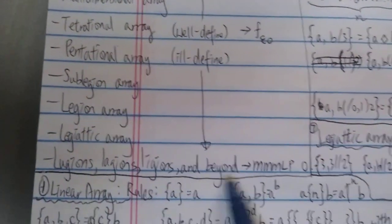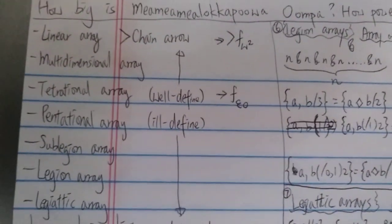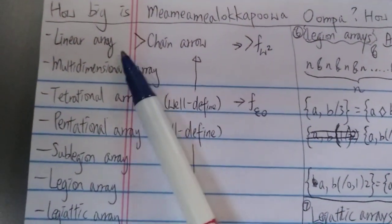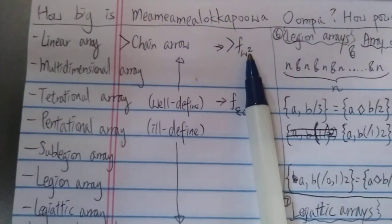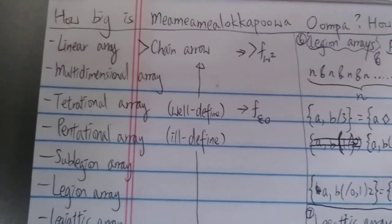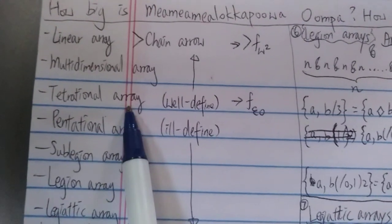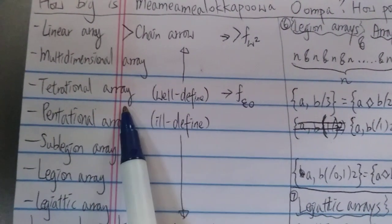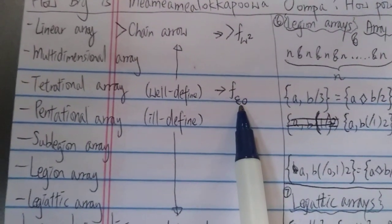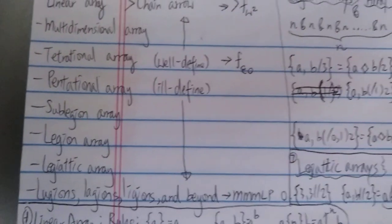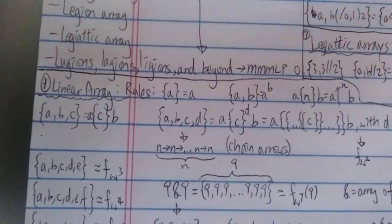This number is beyond even this level. I know it's kind of ill-defined but we're going to look at it anyway. Linear array, the first level, is already way way beyond chain arrow notation, which is faster than f of omega squared in the fast-growing hierarchy. Then you have multi-dimensional, and the tetrational level is the highest level of BEAF that is well-defined, which grows at the rate of f of epsilon naught.